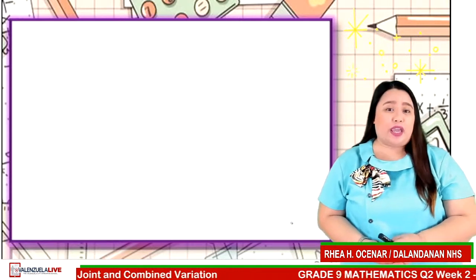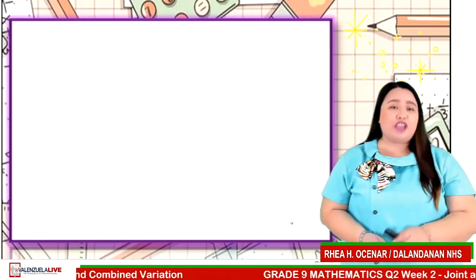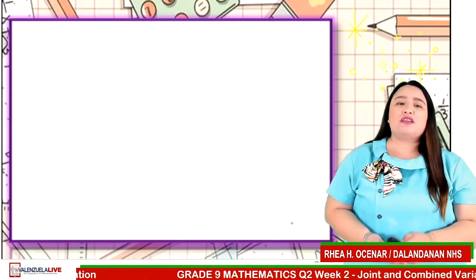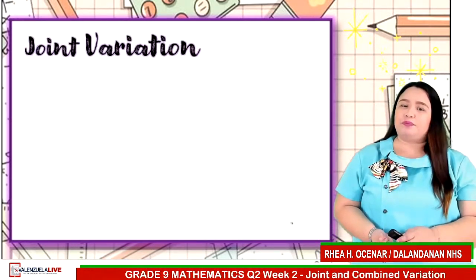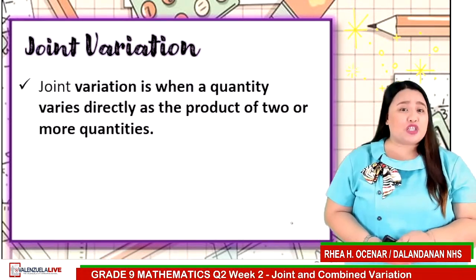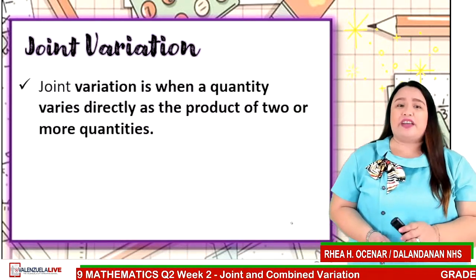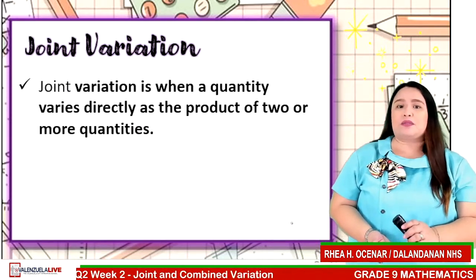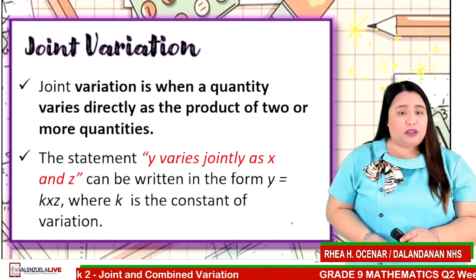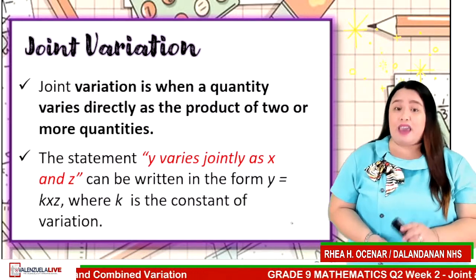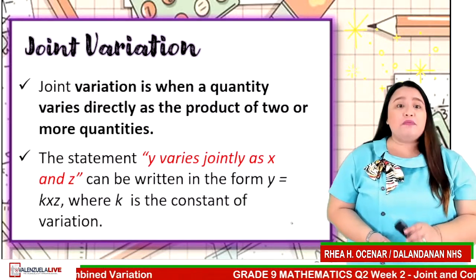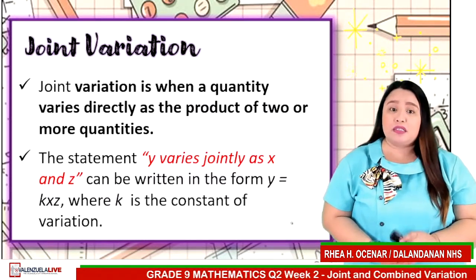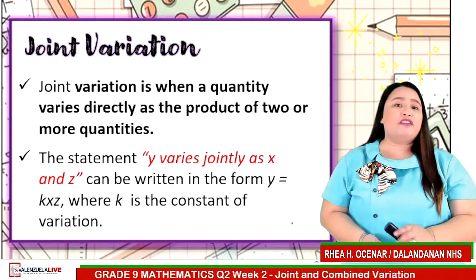We will discuss today the other types of variation, which are joint and combined variation. Joint variation is when a quantity varies directly as the product of two or more quantities. The statement y varies jointly as x and z can be written in the form y is equal to kxz, where k is the constant of variation.